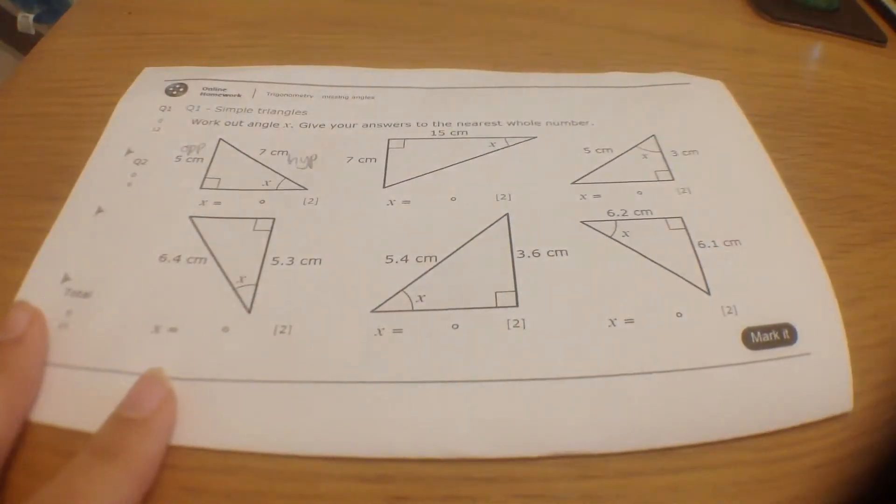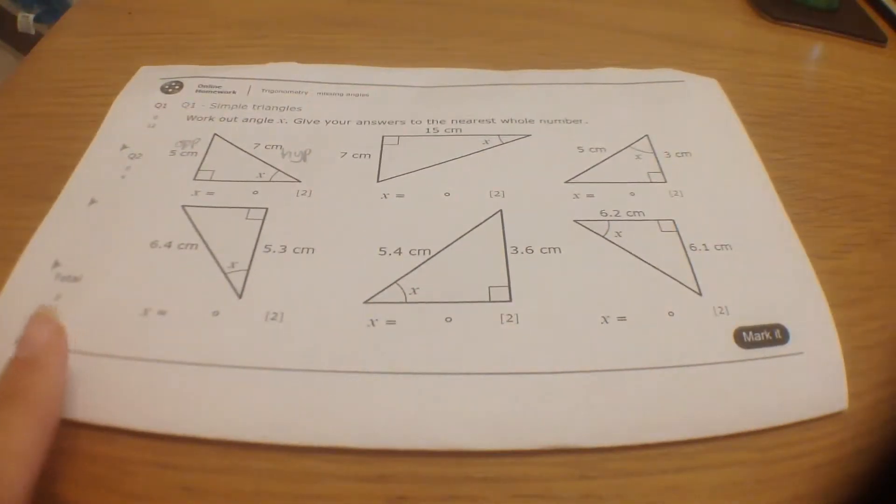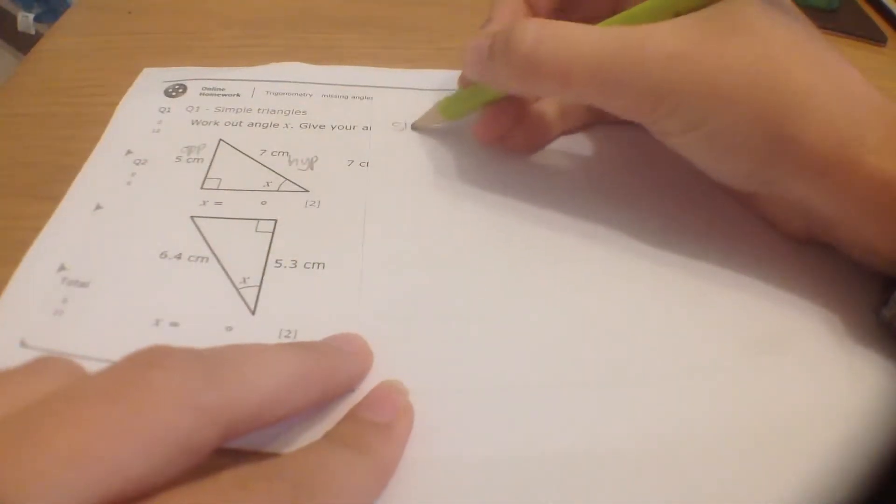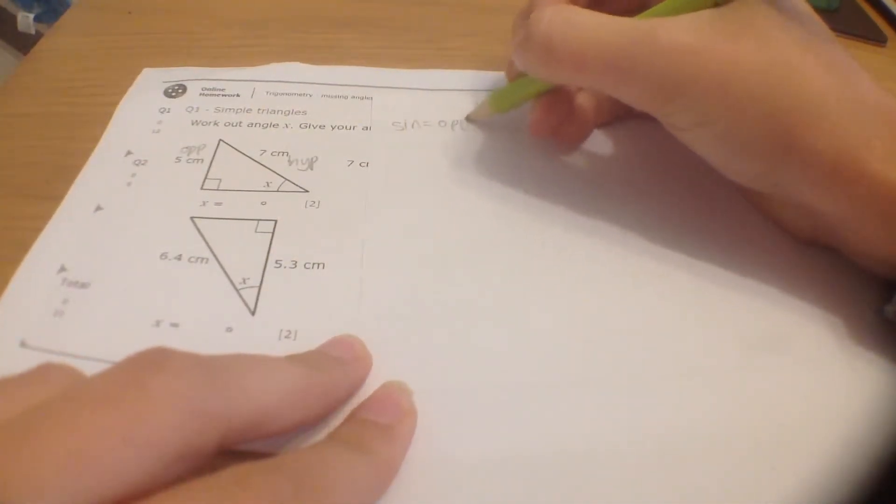So I think to myself, okay, if I've got O and H, I'm going to use SOH, I'm going to use SIN. SIN is the correct word of course, we just say SIN. We know that SIN equals opposite over hypotenuse.